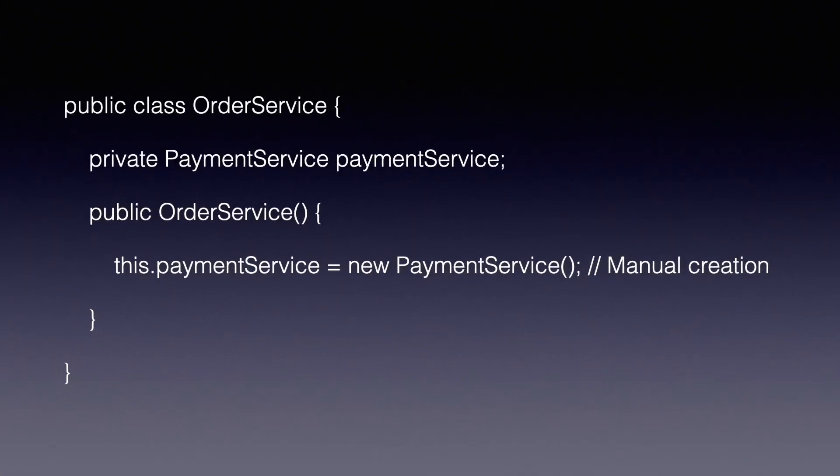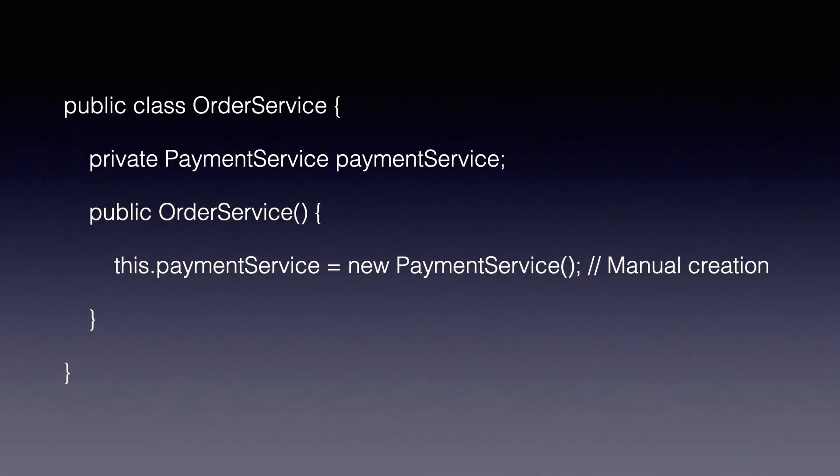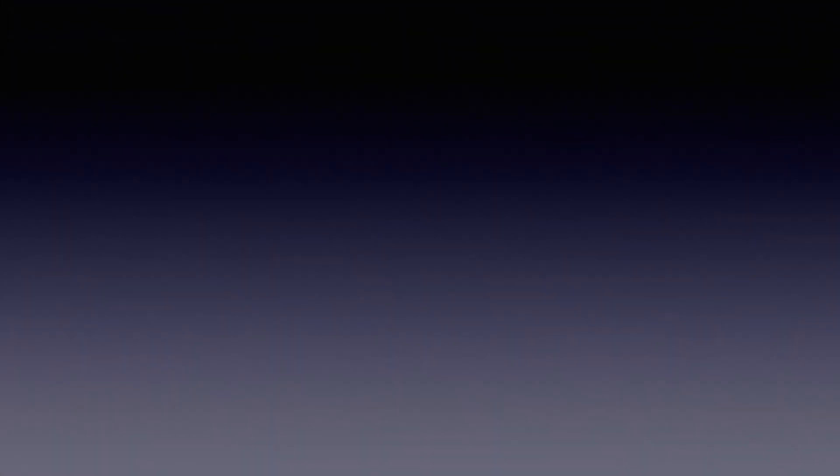Let's break it down. Imagine you're building a food delivery app. Without IOC, every service has to go find and create its own dependencies. For example, it's like you're the chef, the driver, and the cashier all at once. Not only is it exhausting, but every time the process changes — like swapping out a payment service for a new version — you've got to go back and rewrite your code.